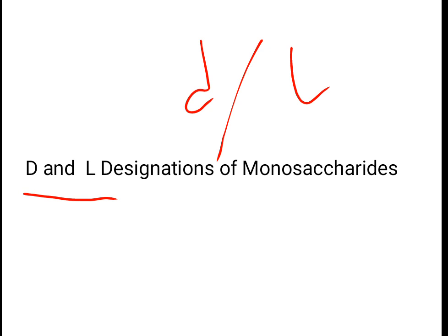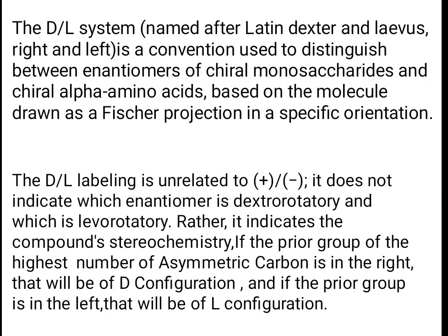The D and L designations of monosaccharides use capital D and capital L — do not confuse these with lowercase d and l, which denote optical rotation (dextrorotatory and levorotatory). The DL system, named after the Latin dexter and laevus (right and left), is a convention used to distinguish enantiomers of chiral monosaccharides and chiral alpha-amino acids. The DL labeling is unrelated to plus/minus optical rotation; it indicates stereochemistry. If the priority group on the highest-numbered asymmetric carbon is on the right, the compound is D configuration; if on the left, it is L.